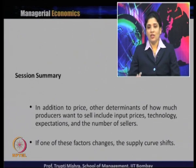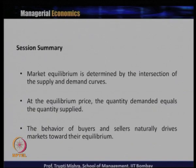According to the law of supply, the price of the product and the quantity supplied are positively related — that is the reason the slope is positive and the supply curve is upward sloping. Apart from price, other determinants influence supply: input price, technology and technological advances, expectation of future prices, and the number of sellers operating in the market. Whenever there is a change in price, it is reflected through movement along the supply curve; but if there is a change in other factors, the supply curve shifts right for an increase or left for a decrease. The market equilibrium is determined by the intersection of the demand and supply curves. At the equilibrium — the market clearing price — quantity demanded equals quantity supplied. Any mismatch leads to shortage or surplus, and the behavior of buyers and sellers naturally drives the market back toward equilibrium.